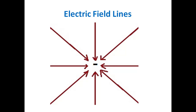Similar is the case with a negative charge. If you keep a negative charge and place a unit test charge anywhere in space, this negative charge will attract the unit test charge. Therefore, the electric field lines due to a negative point charge — mind the word point charge, this is very important — will be radially inward and terminating at the negative charge.